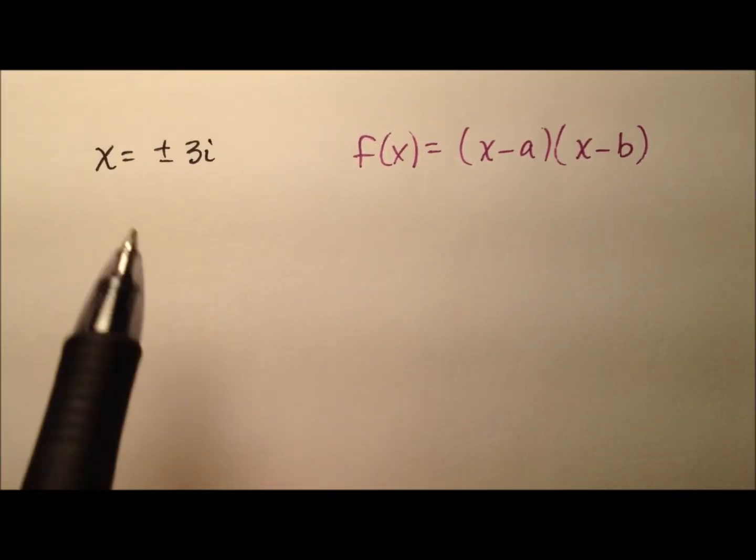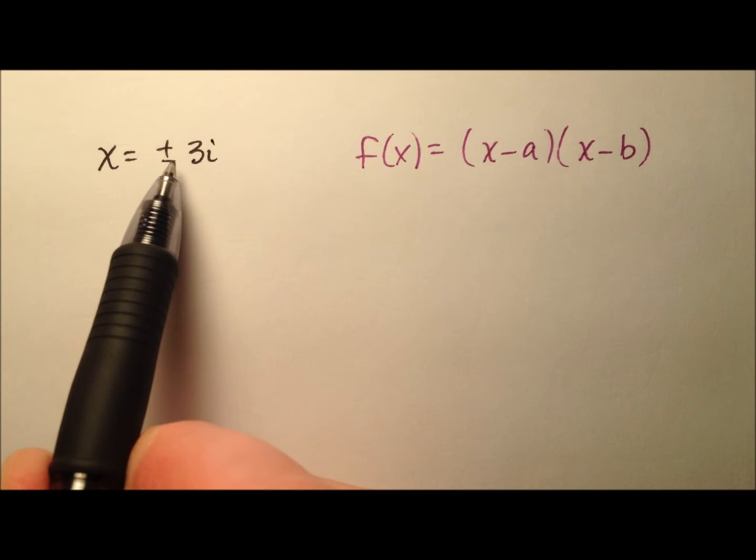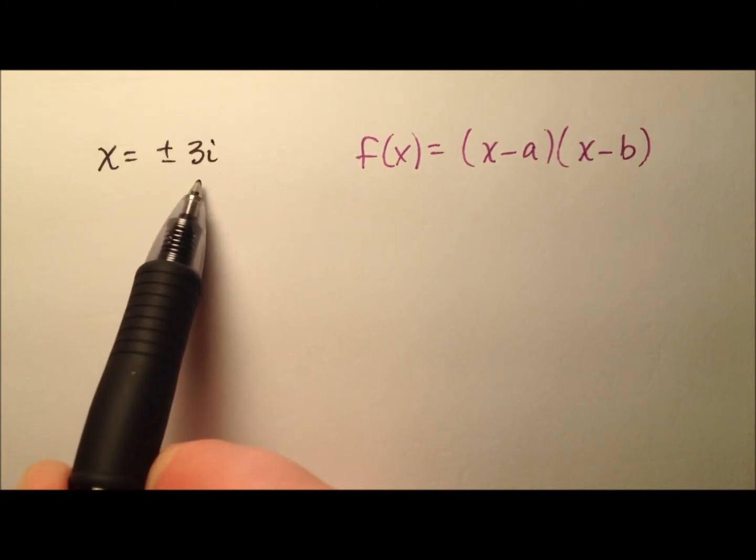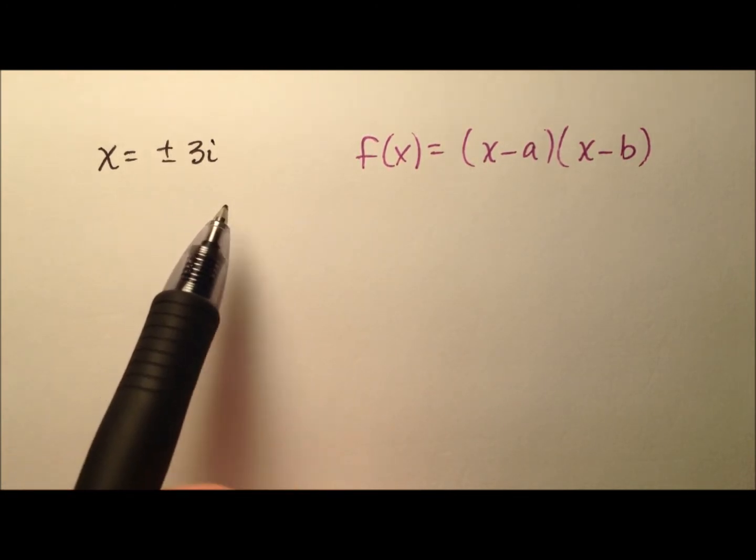In this example, I'm going to start with these two complex roots, positive 3i and negative 3i, and from them I'm going to write a quadratic function.